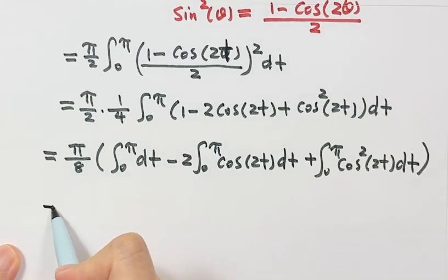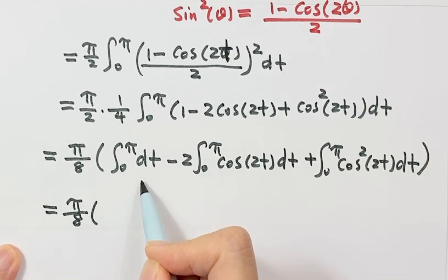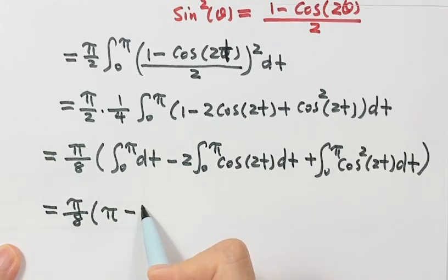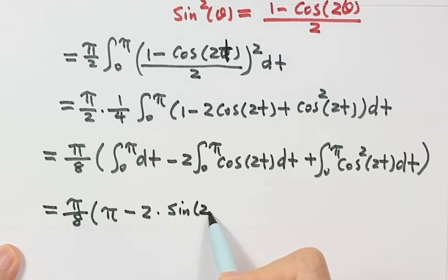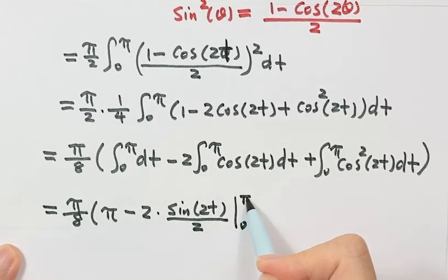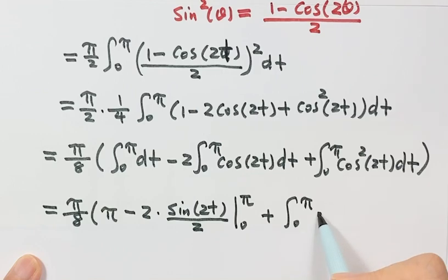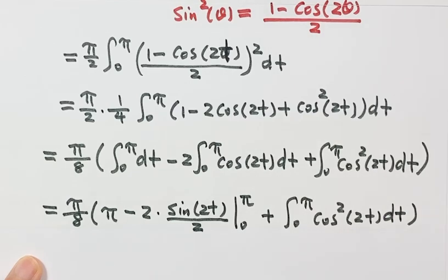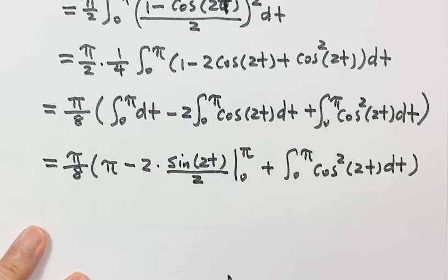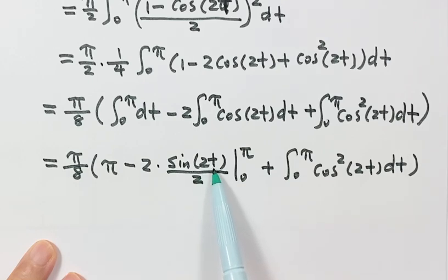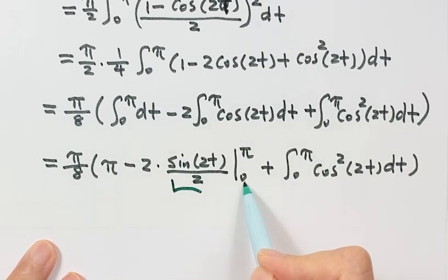Now let's work on each integral. The first one evaluates to π. For the second one, the integral of cosine 2t is sine 2t divided by 2, evaluated from 0 to π. Putting in π gives sine 2π which is 0, and putting in 0 gives sine 0 which is 0. So this part is just 0.